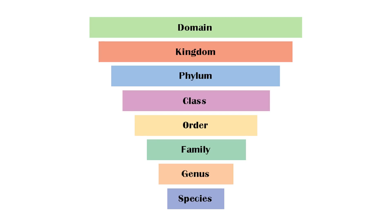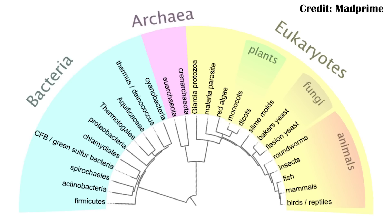Starting from the most basic level, we're going to start from the top, which is domain. Domains are essentially like kingdoms, but even more expansive. For example, you have bacteria — all bacteria. The Archaeans are another group of single-celled organisms. And then you have the eukaryotes, which are basically every other thing we normally interact with on a daily basis, meaning all of the animals, all the plants, all the fungus.